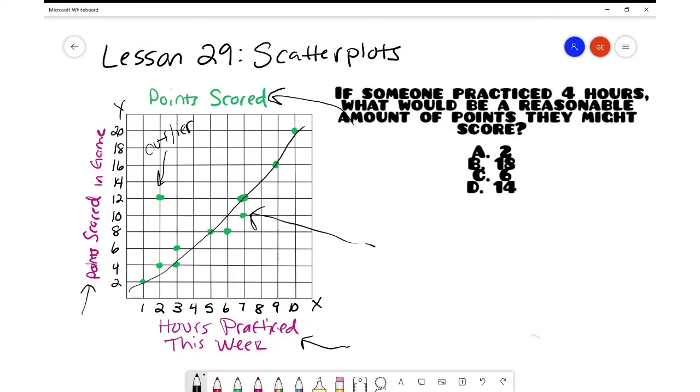All right, my last question for you is, if someone practiced four hours, what would be a reasonable amount of points they might score? So check out the trend and see what you think. Okay, let's see if we got the same thing. So for A, it says two points. And I'm thinking that's way too small for the trend. That would be below the trend line.